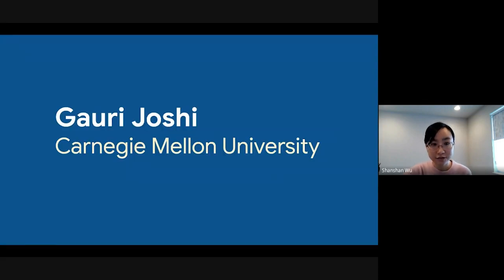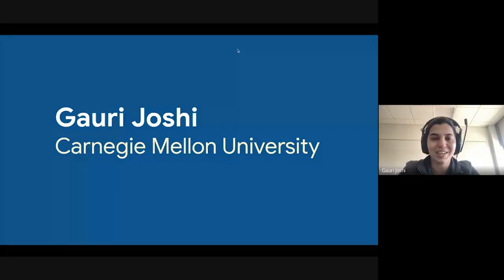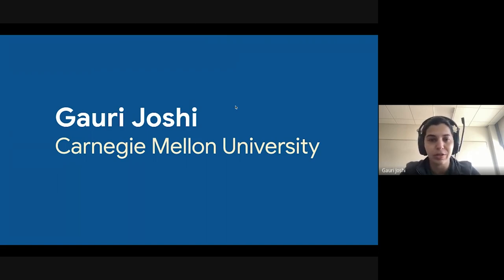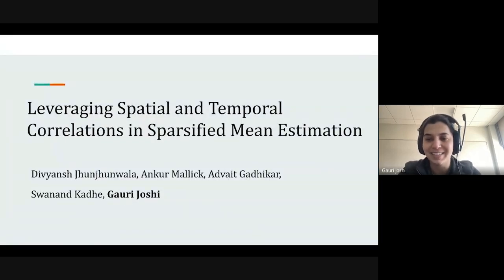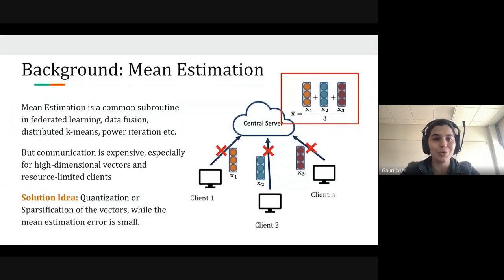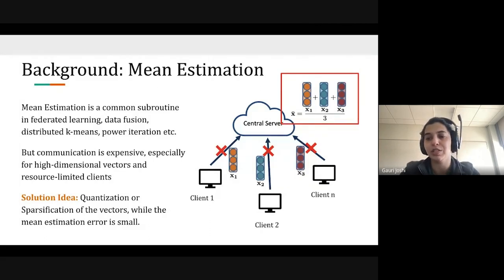Our next speaker is Gauri Joshi from CMU. Today I am going to talk about a work led by my student Divyansh, appearing at NeurIPS this year. The focus of this work is on the problem of mean estimation, where we consider a central server trying to estimate the mean of vectors x_1 to x_n sent by n clients. The true mean is denoted by x-bar. Mean estimation is a very common subroutine — for example, in federated learning, after every communication round, the central server collects model updates from participating clients and averages them.